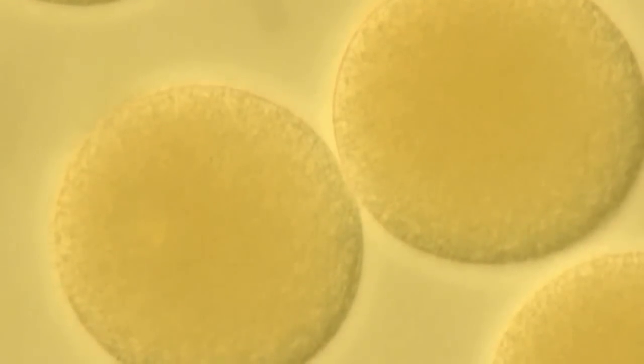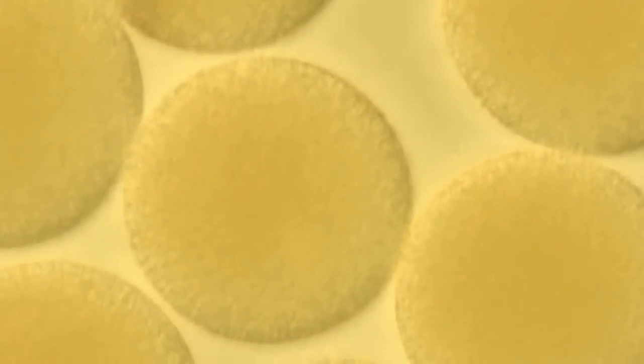Sea urchins are frequently used as animal models for developmental biology. The unfertilized sea urchin egg is a single spherical cell, about 90 microns in diameter.